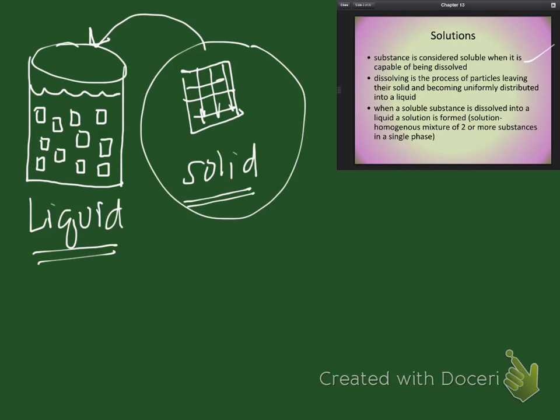When we dissolve things, by definition, it's a homogeneous mixture of two or more substances that are in a single phase. So we've got these things mixed together. They're homogeneous, which means they're distributed evenly, and they're in a single phase.